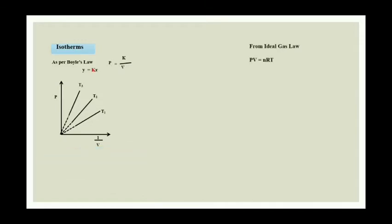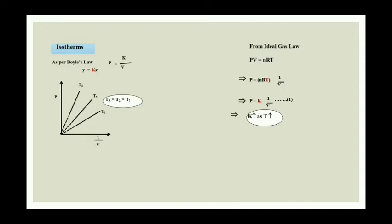To check whether T1, T2, or T3 is greater, we use the ideal gas equation PV = nRT. So P = nRT × (1/V), meaning K is nothing but nRT. If K increases, temperature also increases. From P = K/V, if K increases, pressure also increases. So if pressure is high, K is high, and temperature is also high. Therefore T3 is greater than T2 greater than T1.